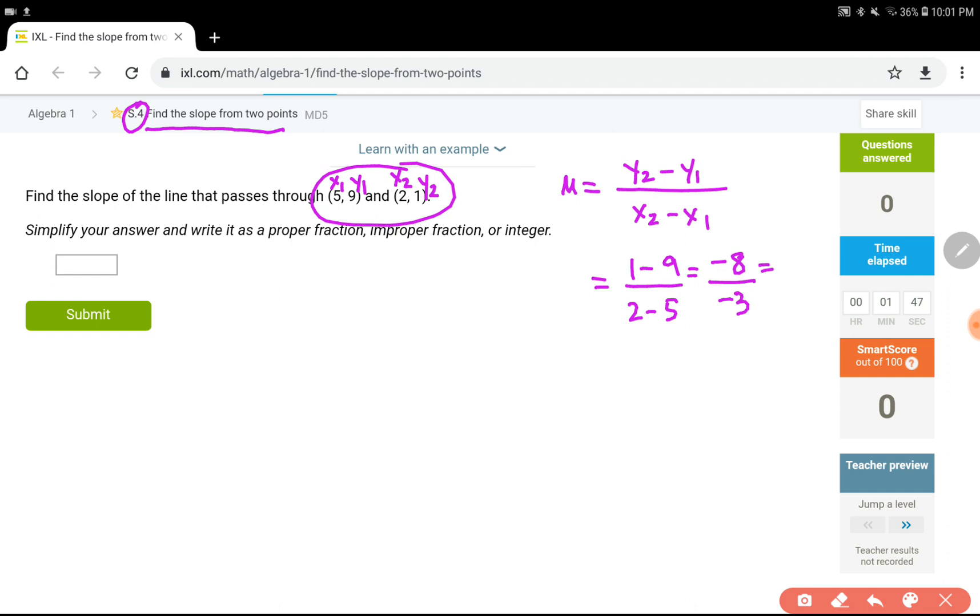1 minus 9 is negative 8 divided by 2 minus 5 is negative 3. When you divide two negative numbers, remember, the whole thing turns into positive. Instead of negative 8 over negative 3, we can just put 8 over 3.